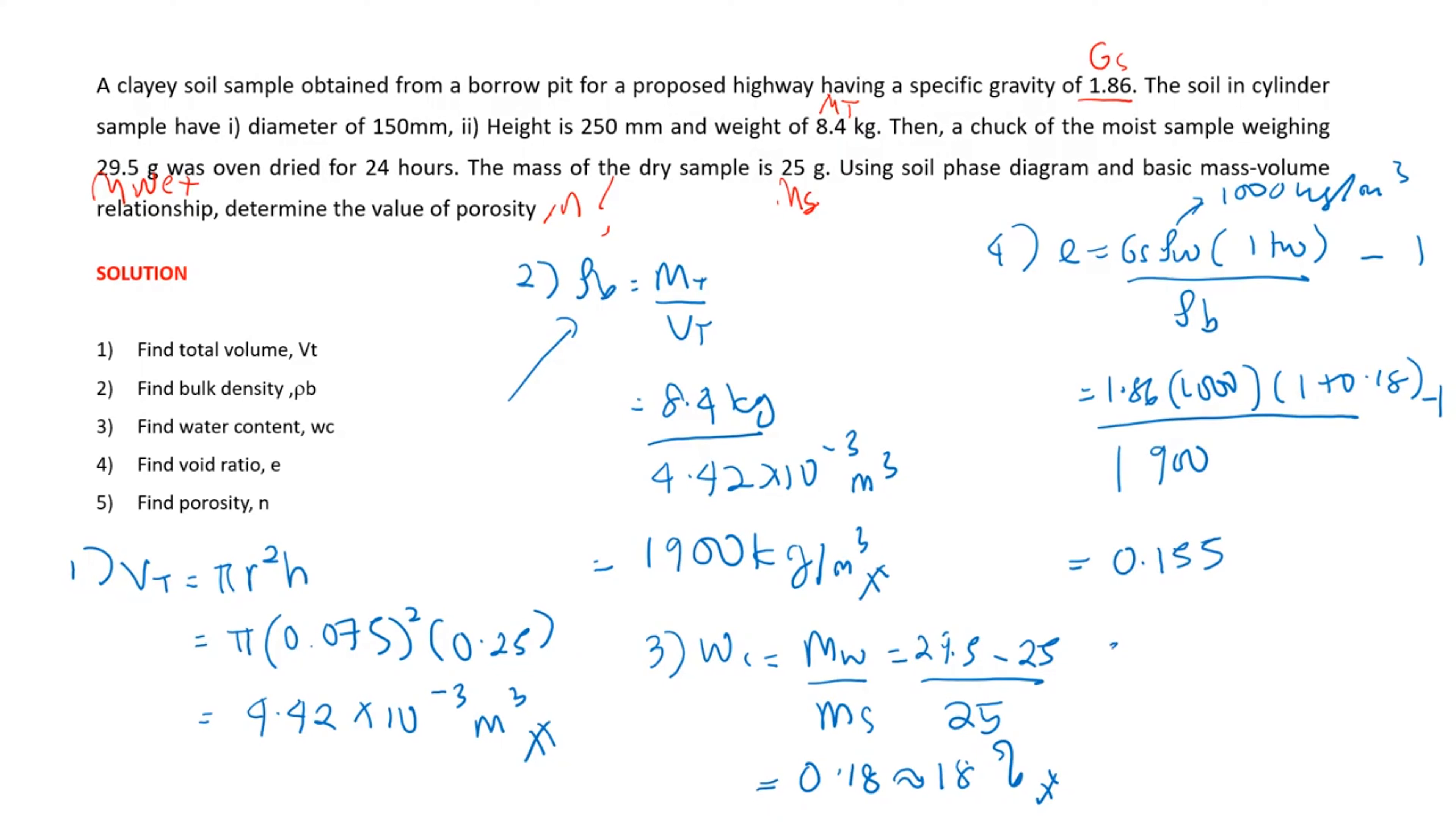Finally, now you can get the porosity by using the relationship between porosity and void ratio. You get the porosity equal to 0.134. So the answer for this question is porosity equals 0.134. That's all, thank you very much.